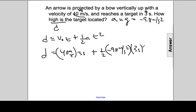Now let's simplify. 40 times 3 is 120 meters per second times seconds. The seconds will cancel, giving us meters.